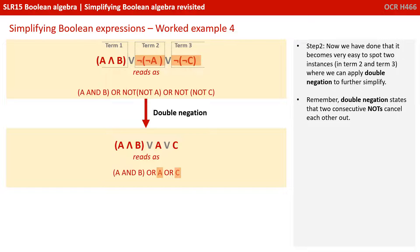Now that we've done that, it becomes very easy to spot instances in terms two and three where we can apply double negation to further simplify. Remember, double negation states that two consecutive NOTs cancel each other out.